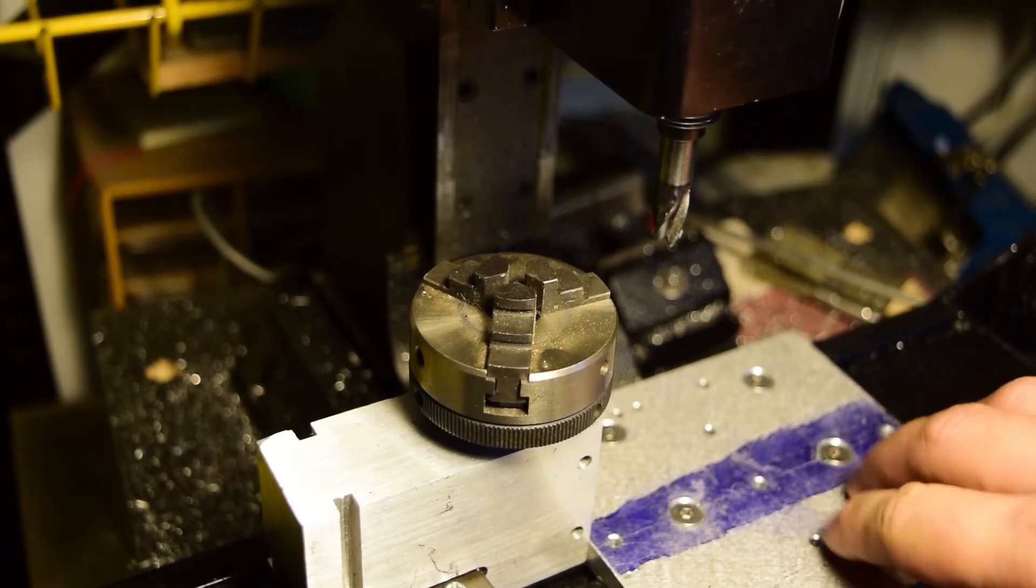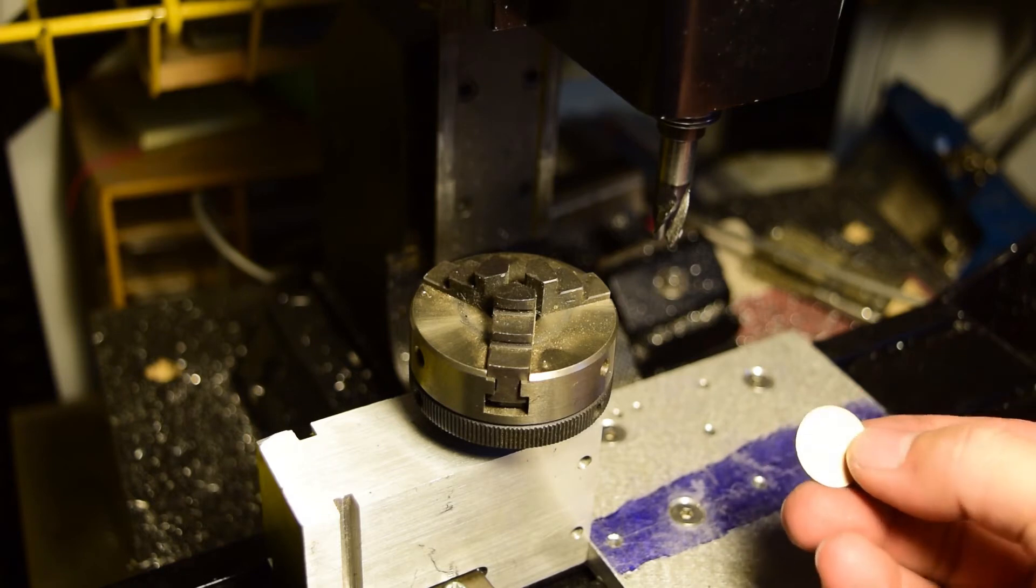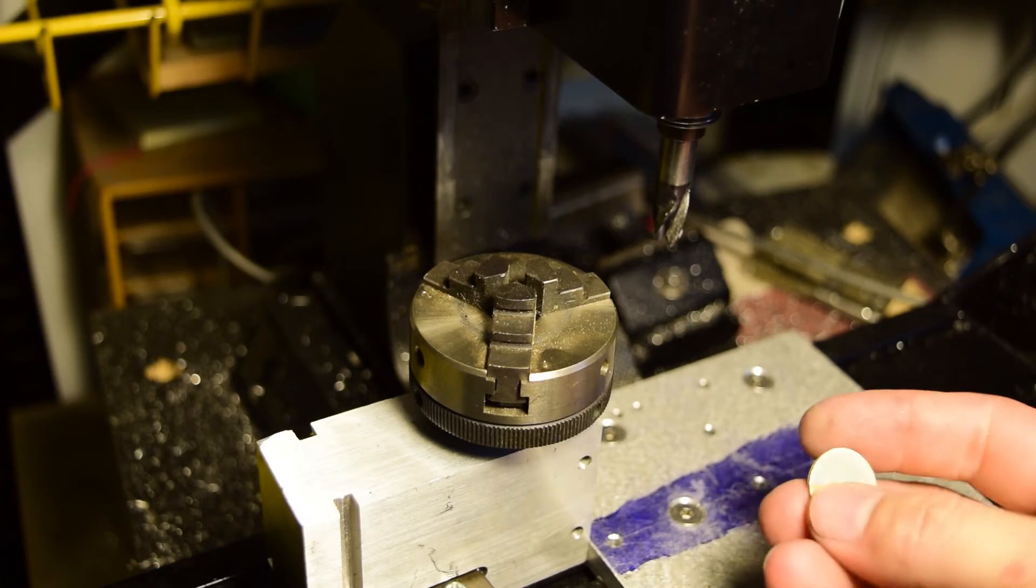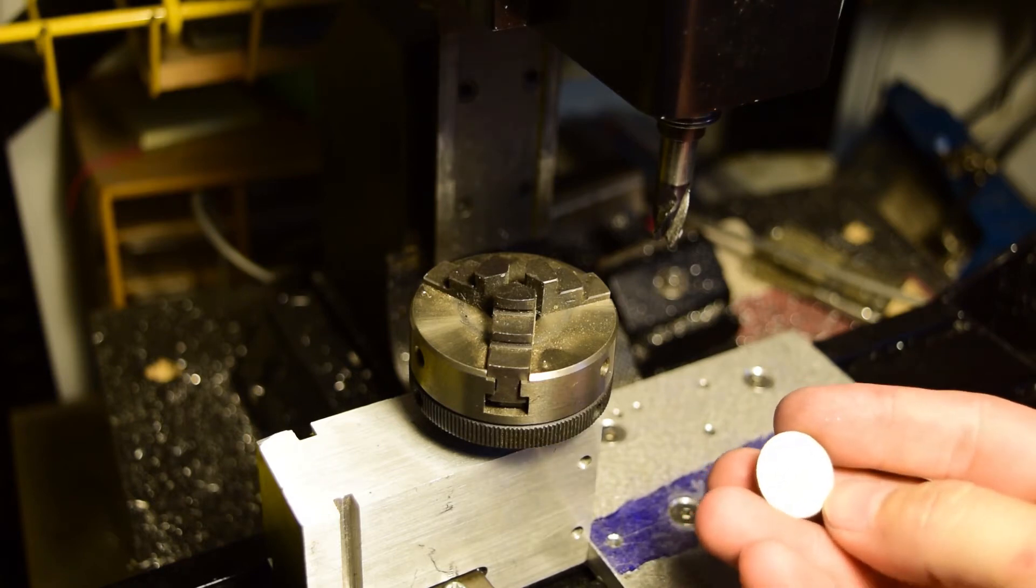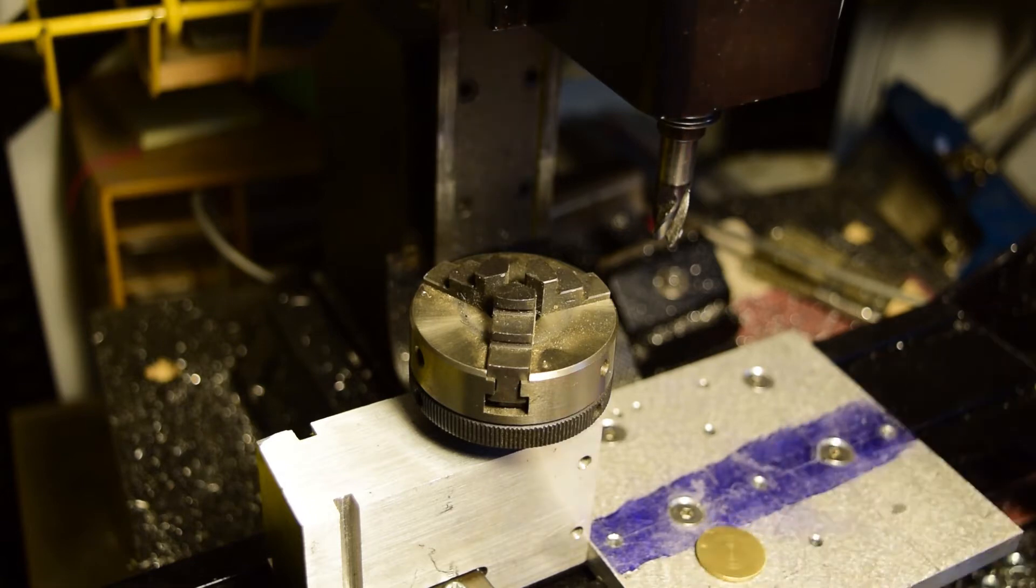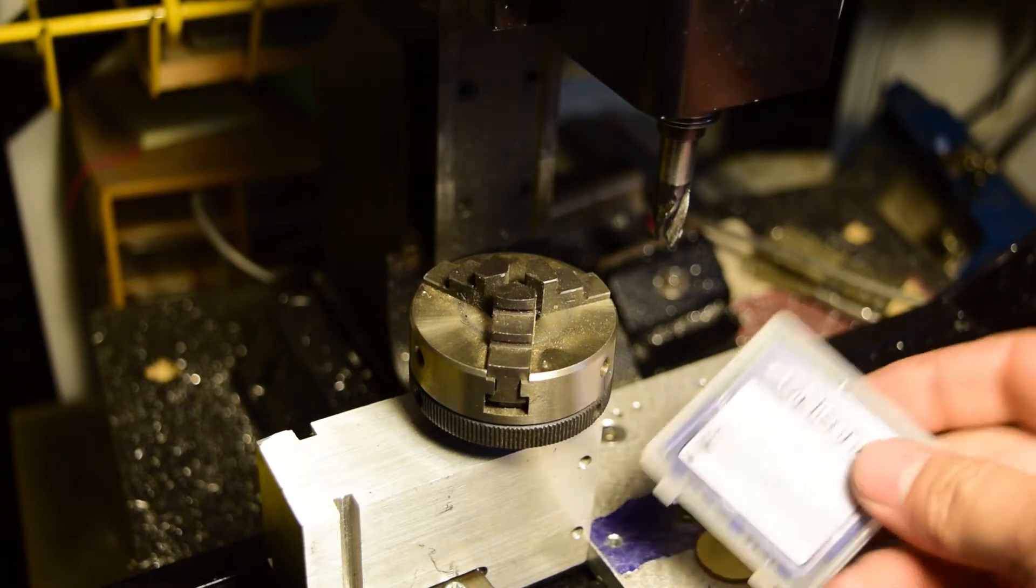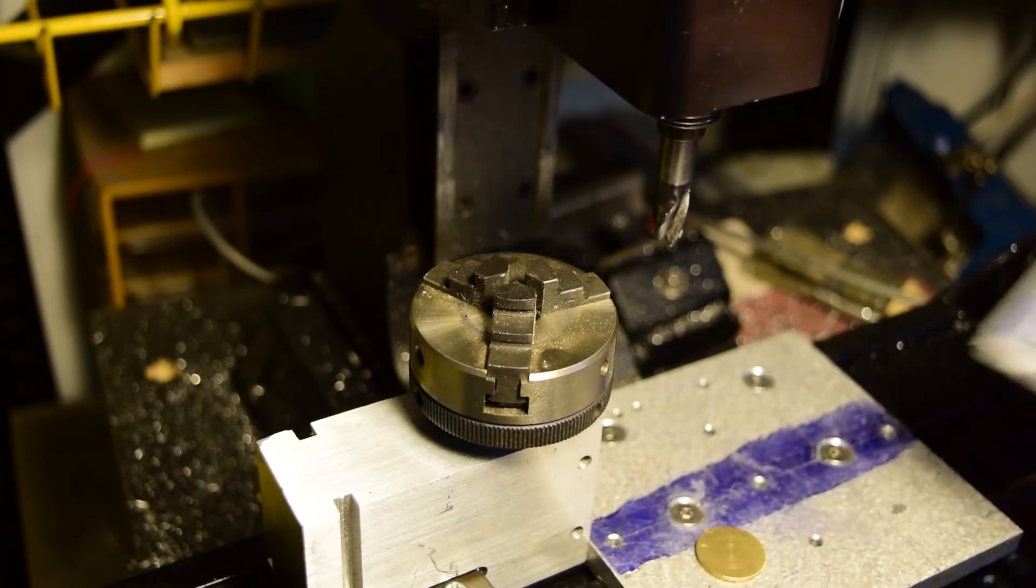A friend of mine wanted to do some little engraved charms for a charm bracelet or something. This is my first time fooling around with CNC engraving, so I've got some little Chinese carbide engraving points here.